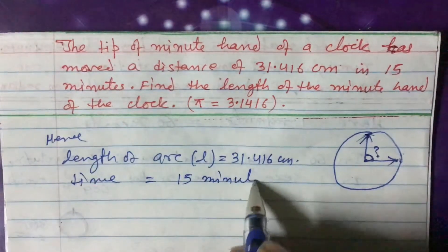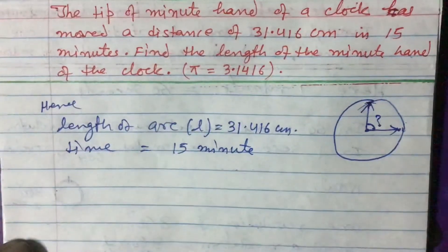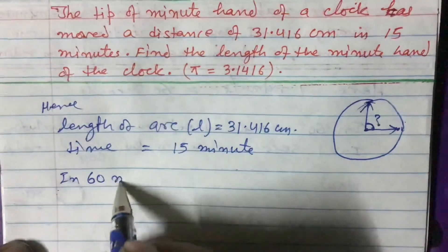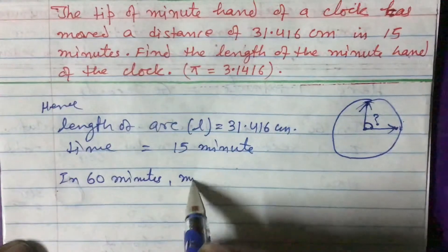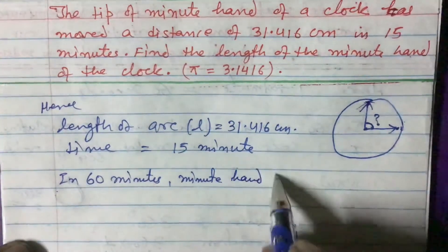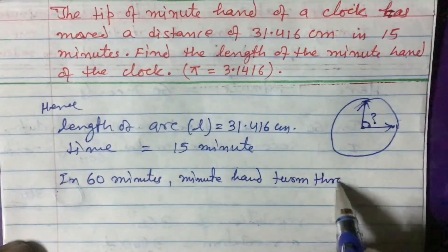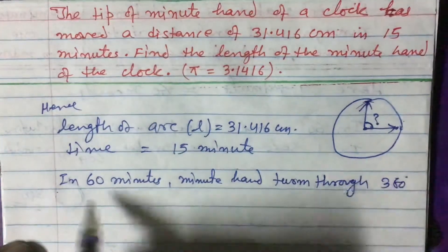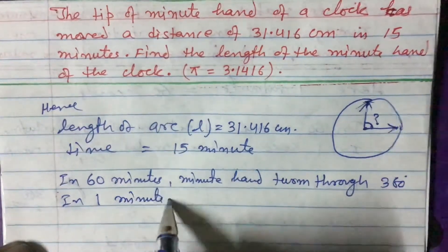Now, what is the angle made by the minute hand in 15 minutes? Let us calculate. In 60 minutes, the minute hand turns through 360 degrees.